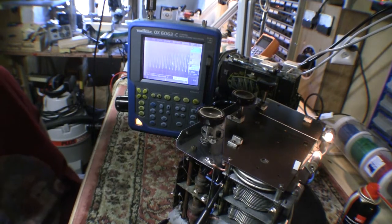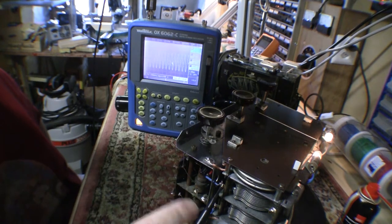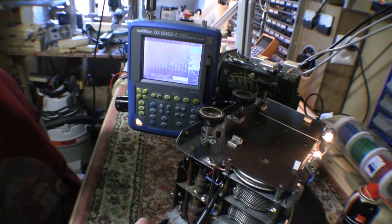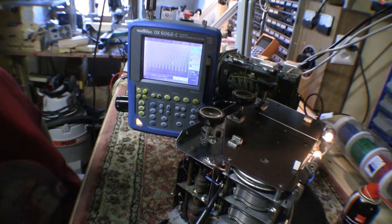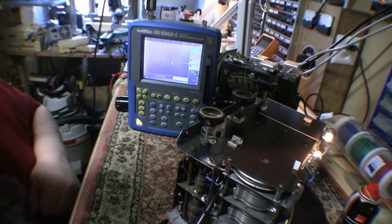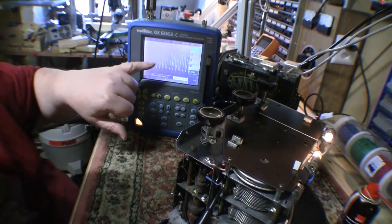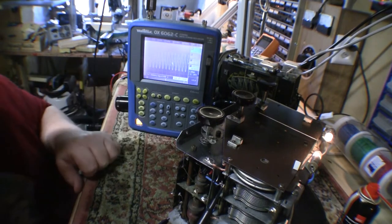So I'm just scoping up the output of the local oscillator where it connects to the variable condenser. The impedance of the scope probe unfortunately kills the signal, so this is on medium wave. But as you can see, I have a local oscillator signal here.